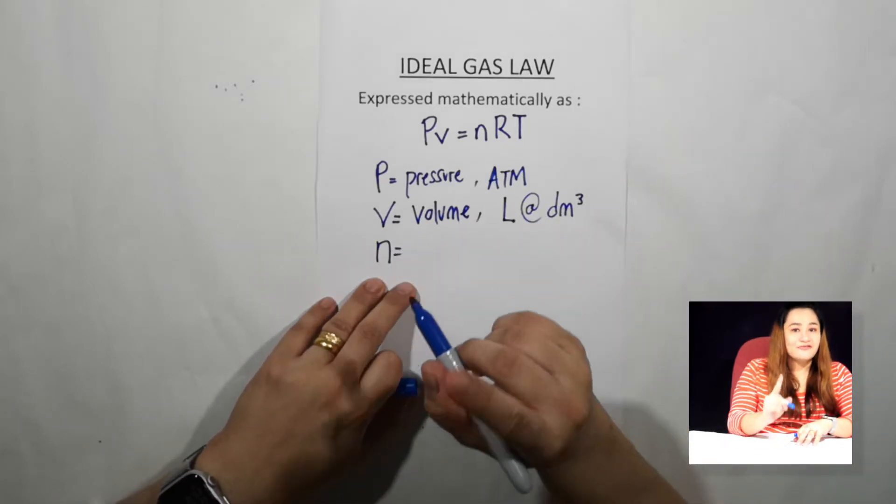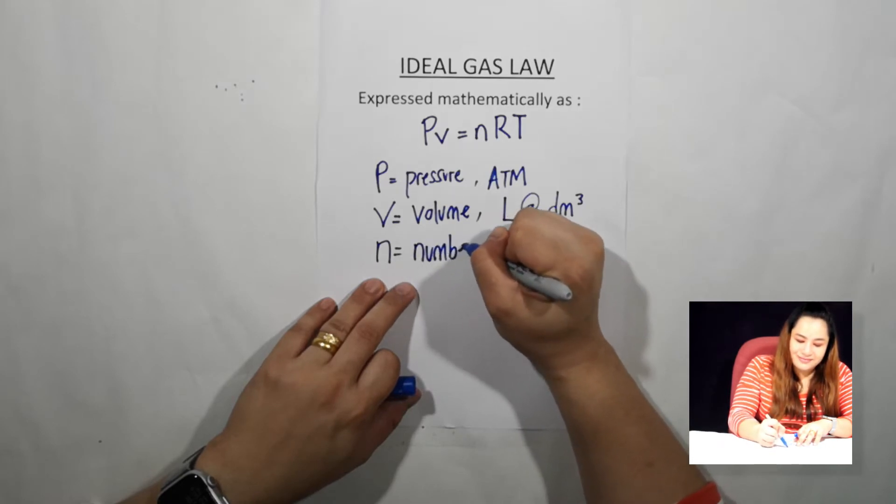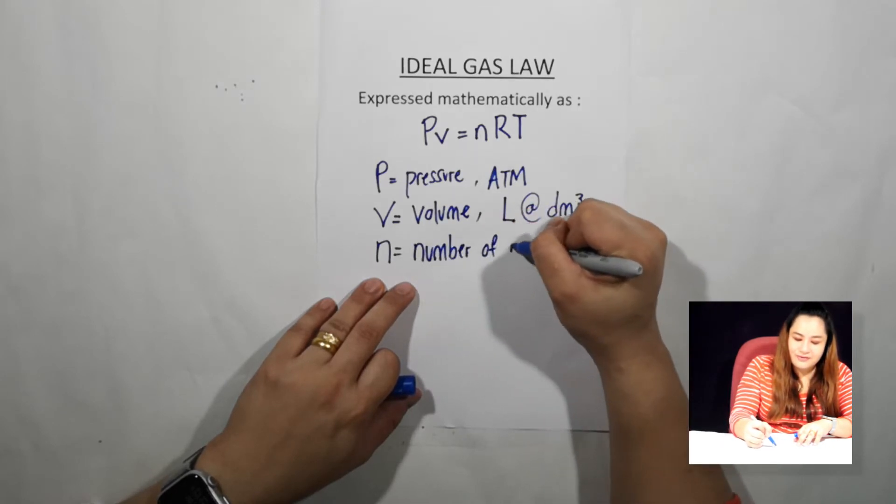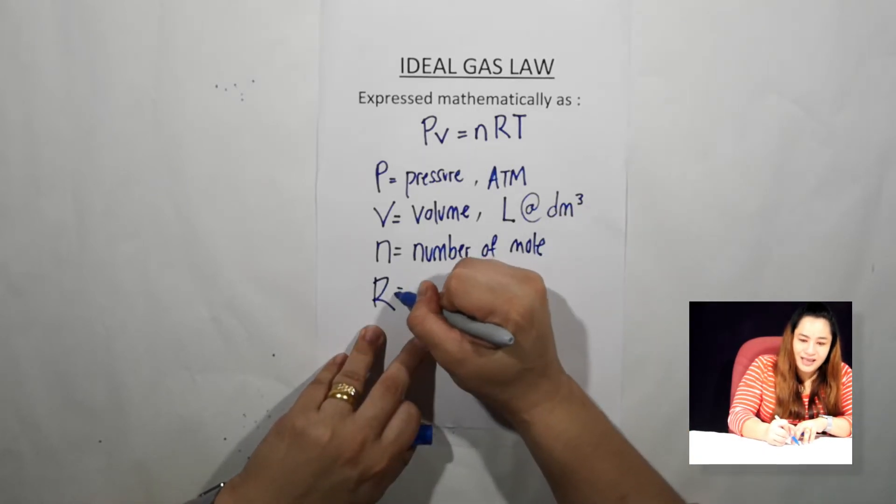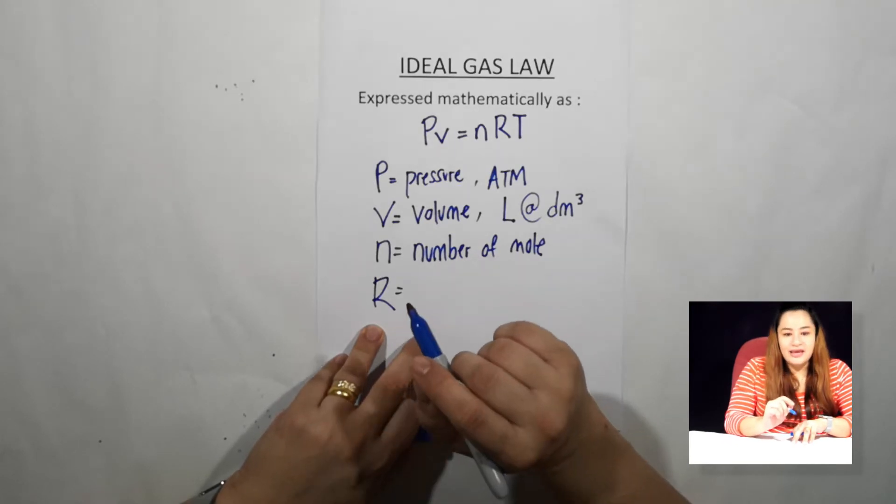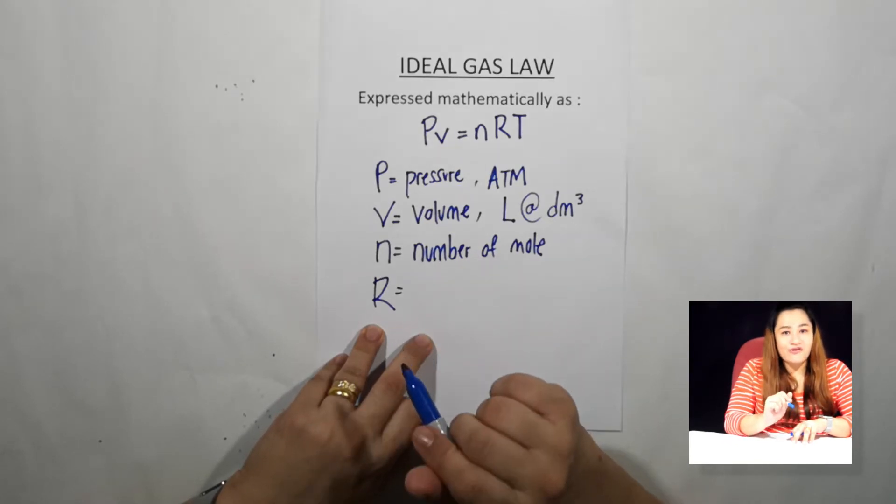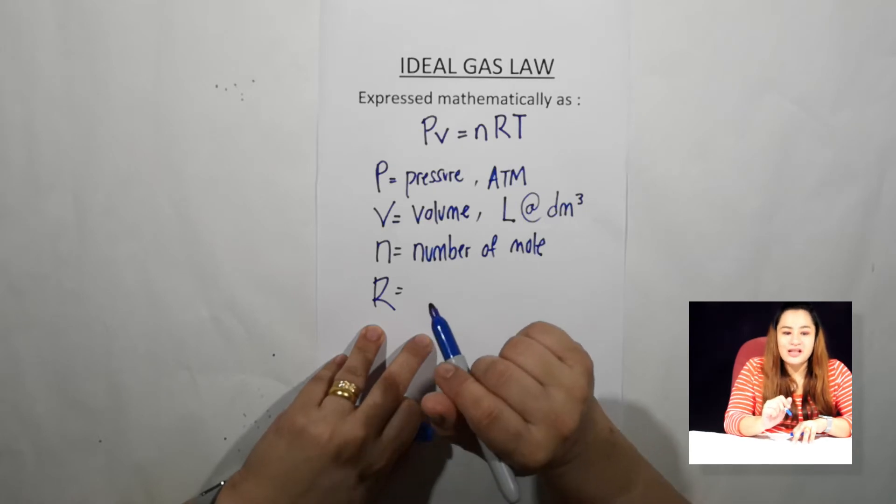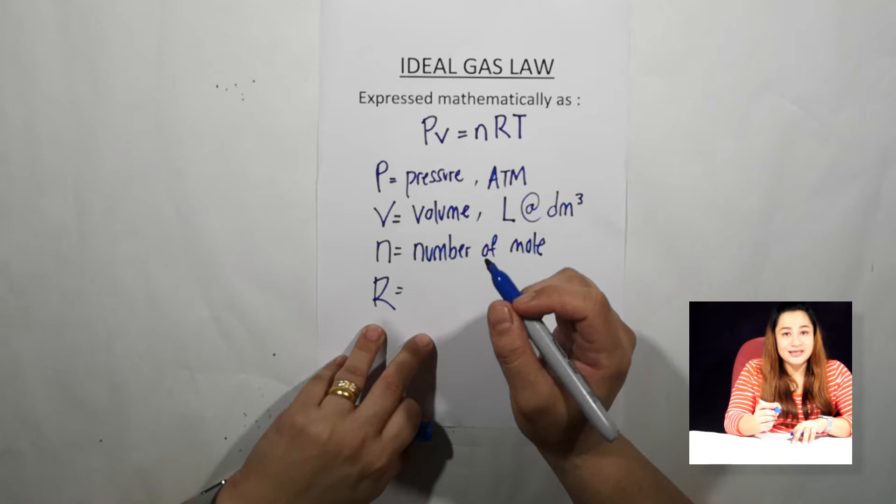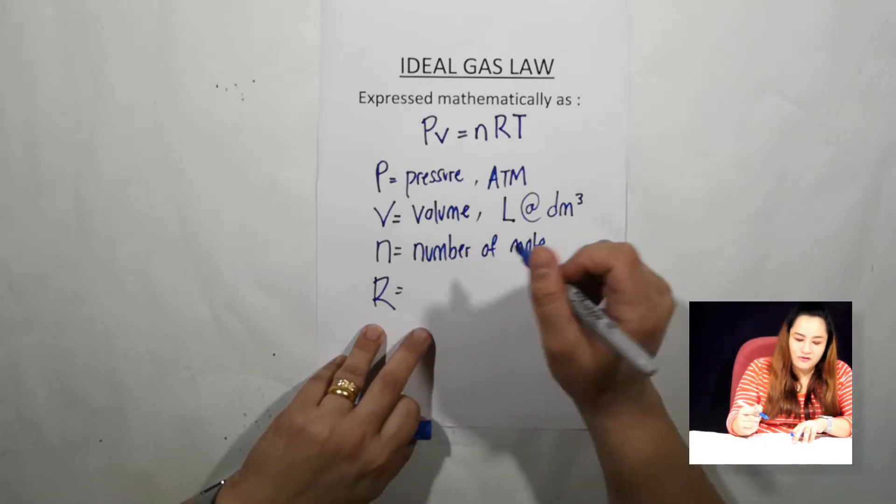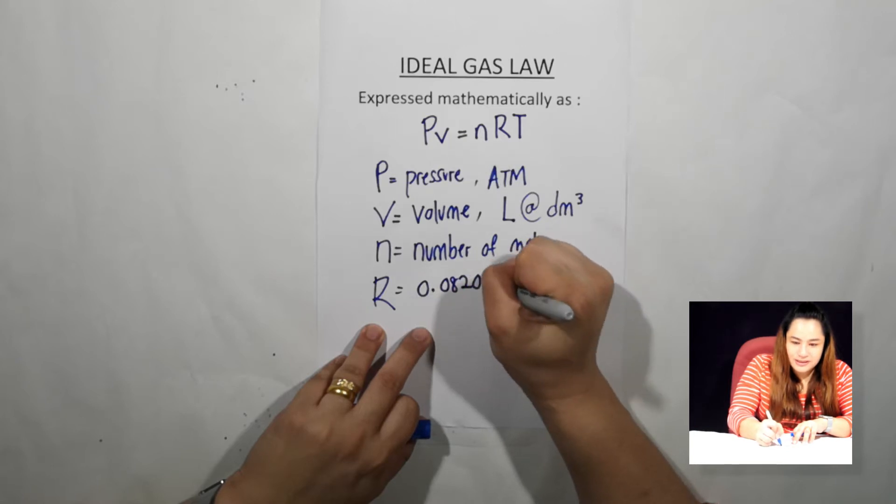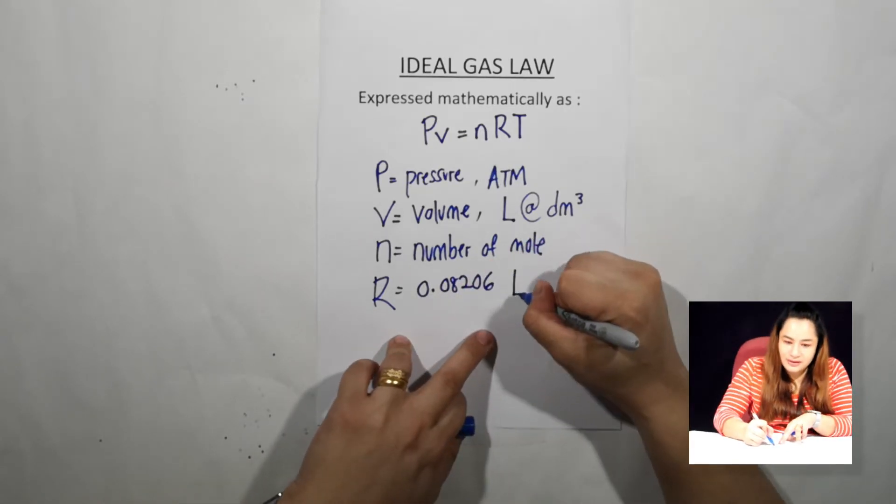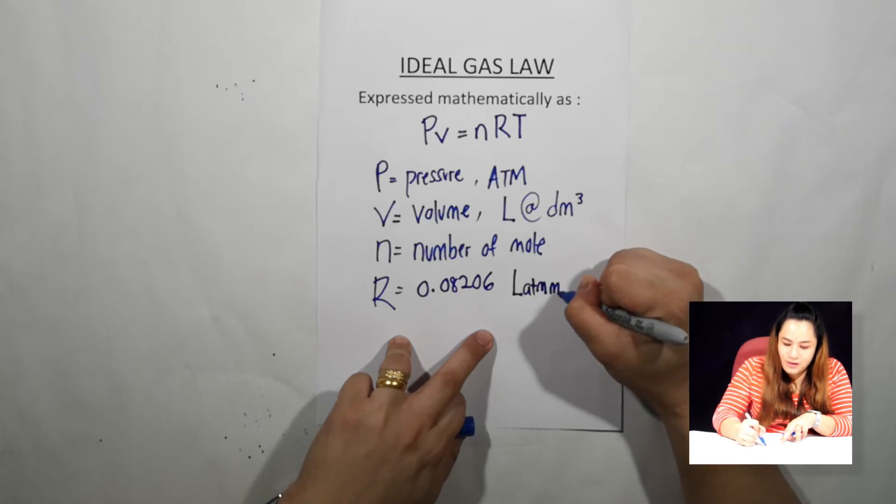n is for number of moles. And R is the gas constant. The value and unit of R depends on the unit of pressure and volume used in the equations. The value of R is 0.08206. The unit is atm per mol per kelvin.